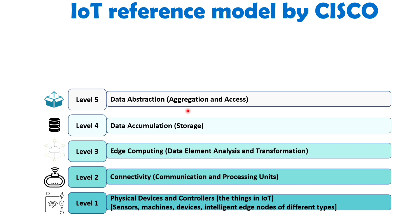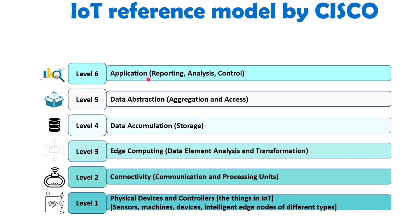Level six is the Application layer. This layer focuses on the software applications and services that leverage the IoT data. It includes reporting, analysis and control applications that enable businesses and users to derive insights, make informed decisions and control the IoT system based on the collected data.